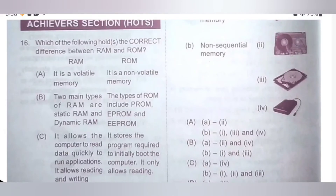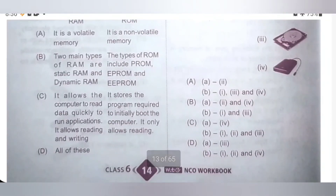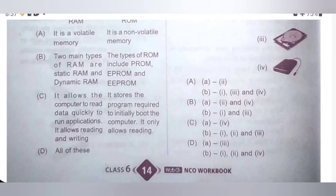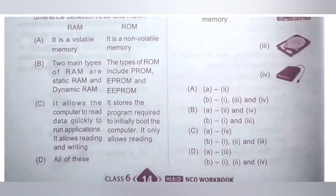Sixteenth question — Achieve section. Which of the following holds the correct difference between RAM and ROM? RAM is volatile memory and ROM is non-volatile memory. Two types of RAM are static RAM and dynamic RAM; types of ROM are PROM, EPROM and EEPROM. RAM allows the computer to read data quickly to run applications and allows reading and writing; ROM stores the program required to initially boot the computer and only allows reading. All options A, B, and C are correct — option D, all of these, is the correct answer.